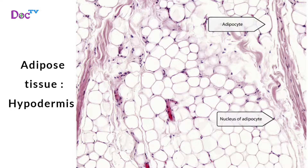Adipose tissue is found in the hypodermis. It has a sparse matrix with closely packaged adipocytes — fat cells — as well as fibroblasts, macrophages and other cells. It is located under the skin, around internal organs and in the breast. This tissue provides food storage, insulation and organ protection.